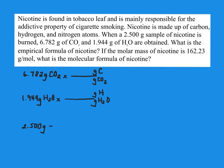Here's another example of finding empirical formula from elemental analysis. Nicotine is found in tobacco leaf and is mainly responsible for the addictive property of cigarette smoking. Nicotine is made up of carbon, hydrogen, and nitrogen. So we've introduced a new idea here.